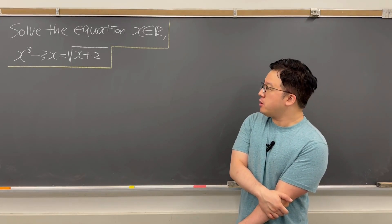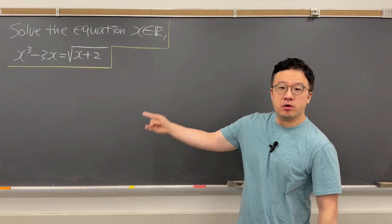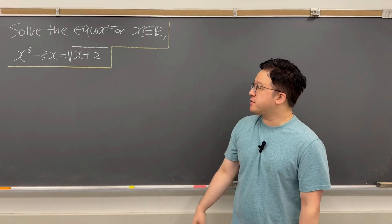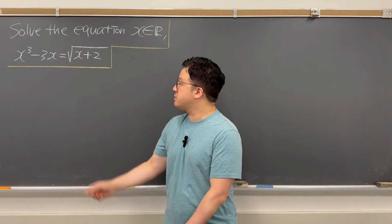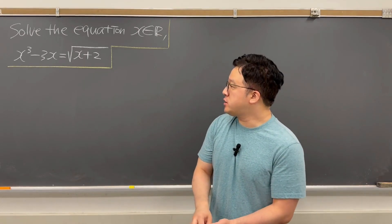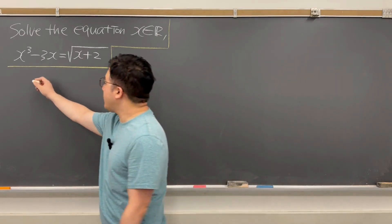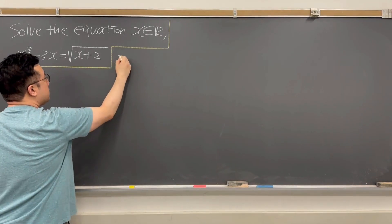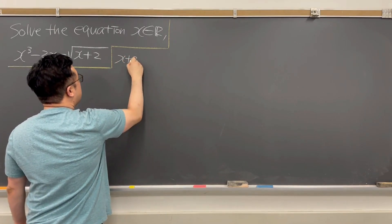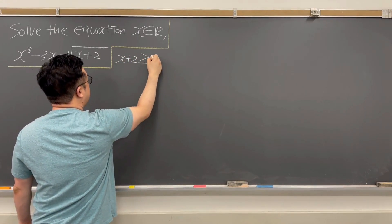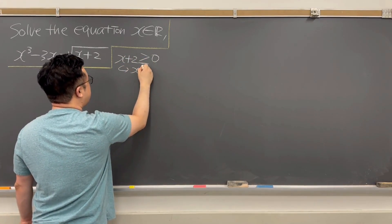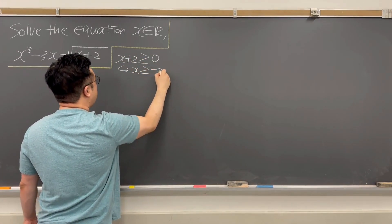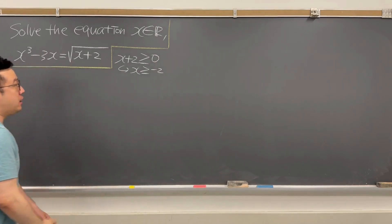First of all, if you take a look at your right-hand side, we have square root of x plus 2, which means x plus 2 should be greater than or equal to 0, which means x is greater than or equal to negative 2.